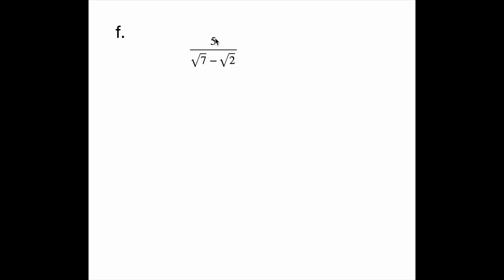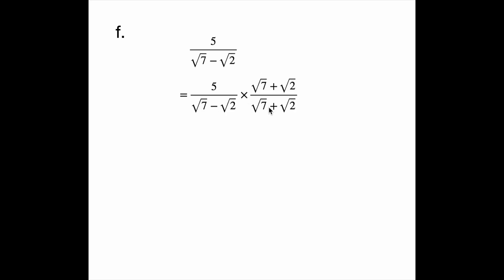Question f. 5 over root 7 minus root 2. I'm going to multiply the bottom by root 7 plus root 2 to get that difference of squares. If I multiply the bottom by root 7 plus root 2, I have to multiply the top by root 7 plus root 2.